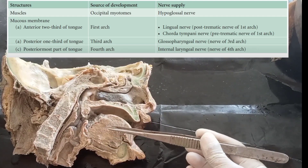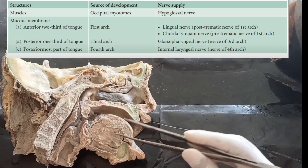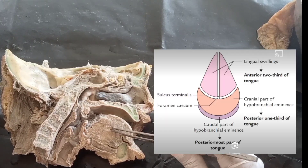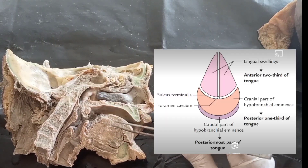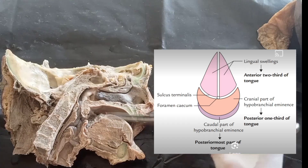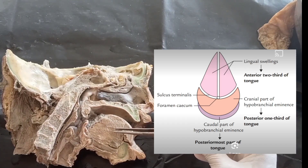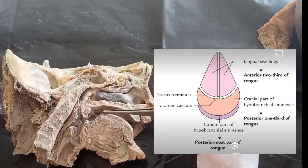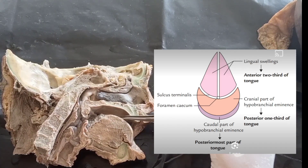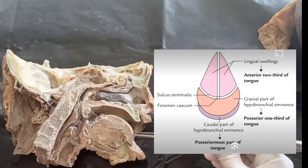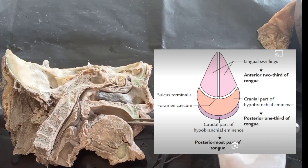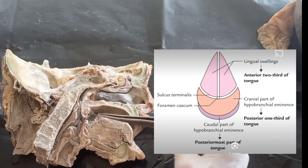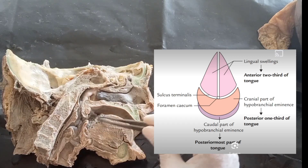In development, the anterior two-thirds of the tongue is derived from the lingual swelling, and the posterior one-third from the hypobranchial eminence. In the anterior two-thirds, the papillae are present, and just behind this area is the lingual swelling.